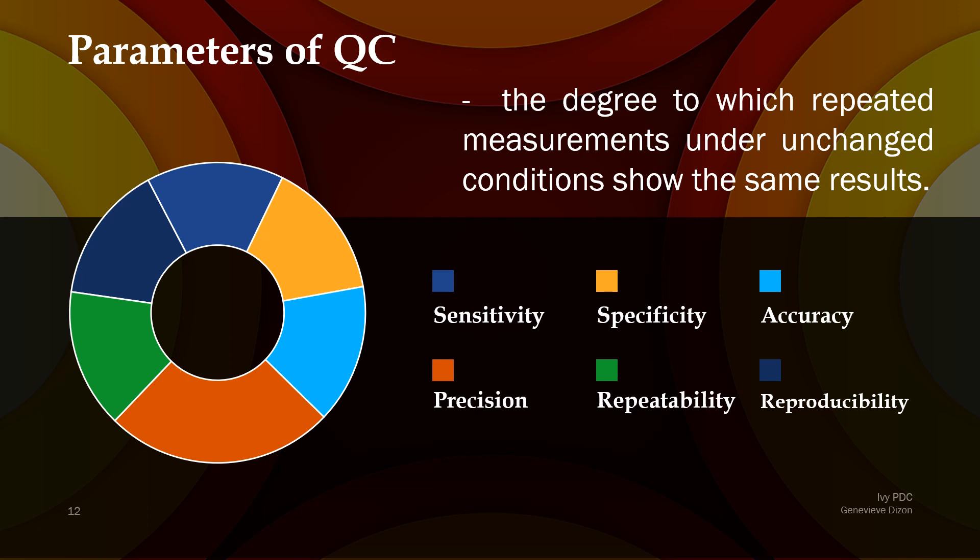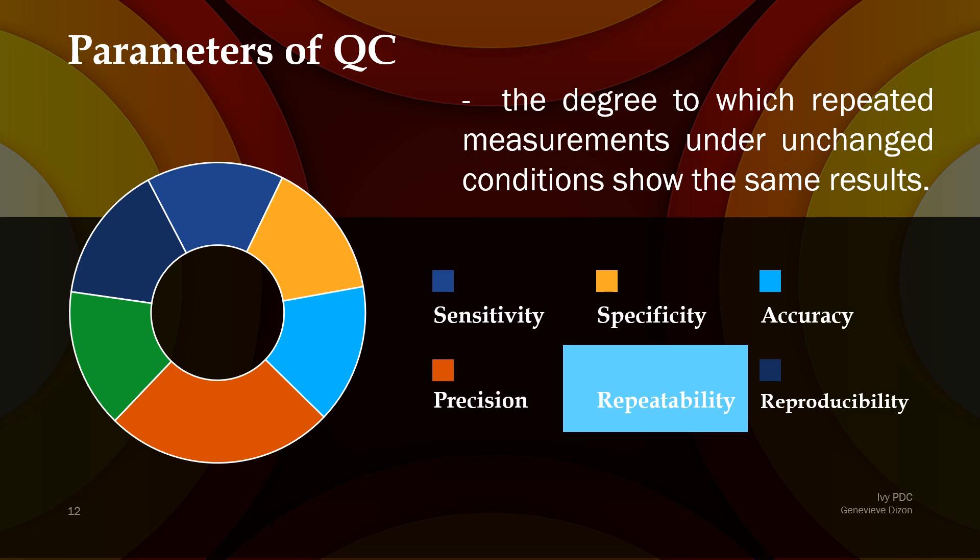For our next definition: the degree to which repeated measurements under unchanged conditions show the same results. We have two choices left — repeatability and reproducibility — and the clue word is unchanged conditions. The answer is repeatability. This is the ability to repeat the testing procedure under unchanged conditions — the degree of agreement between successive measurements made with the same sample, same analyzer, same user, same laboratory, same method, and same reagent. When you run a test and repeat it under all the same conditions and get the same result, that is repeatability.